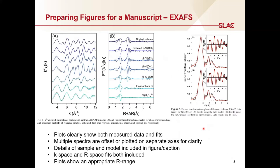Now let's look at some EXAFS data. We see two nice examples here. Both plots clearly show the measured data and EXAFS fits. Multiple spectra are offset, either vertically or on different axes, so the fits for each can be clearly seen. Details about the sample and the model used in the fit are included in the figure or caption. The fits are shown both in k-space and r-space, and in general you should include plots showing both fitting spaces. The plots show an appropriate r-range — from 0 to 6 Angstroms is a good rule of thumb. The only thing I would suggest adding here are units to the y-axis. Chi(k) itself is unitless, but k has units of inverse Angstroms, so the k-cubed weighted EXAFS should have units of Angstroms to the minus 3. When you take the Fourier transform, you introduce another inverse Angstrom, so the Fourier transform should have units of Angstroms to the power of minus 4.